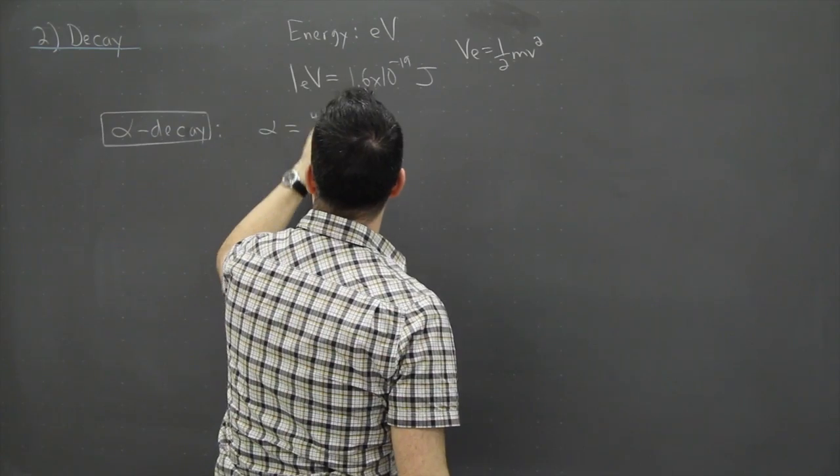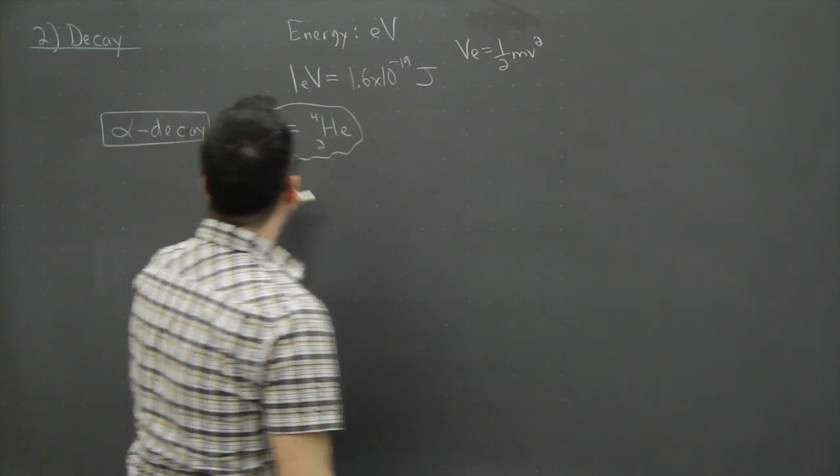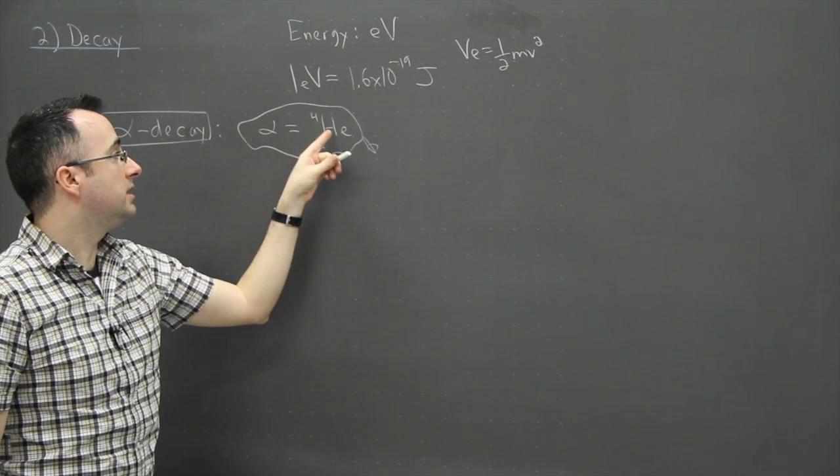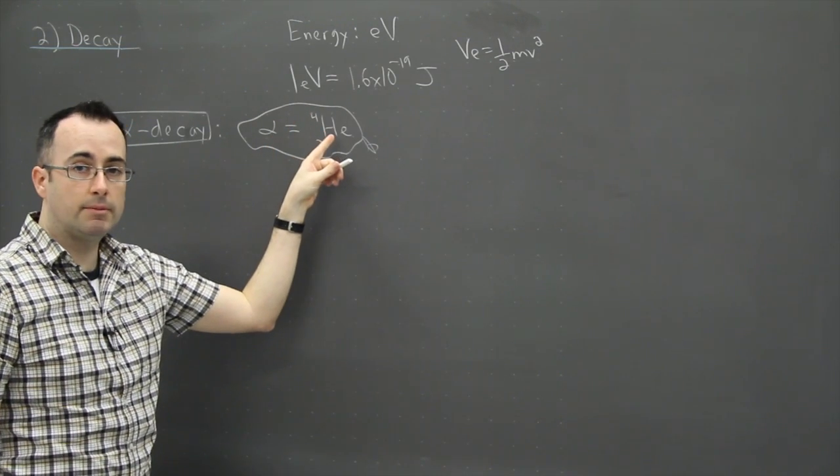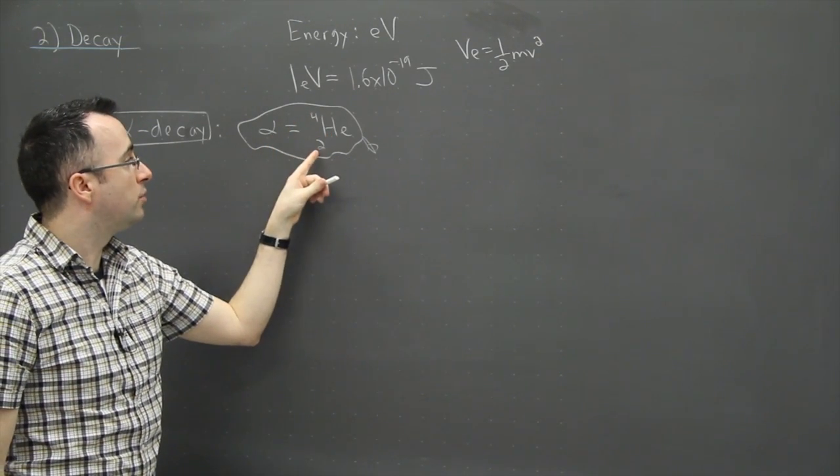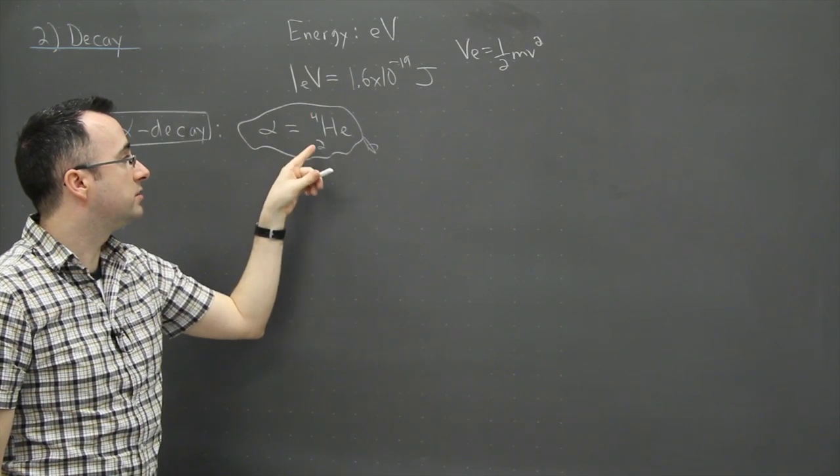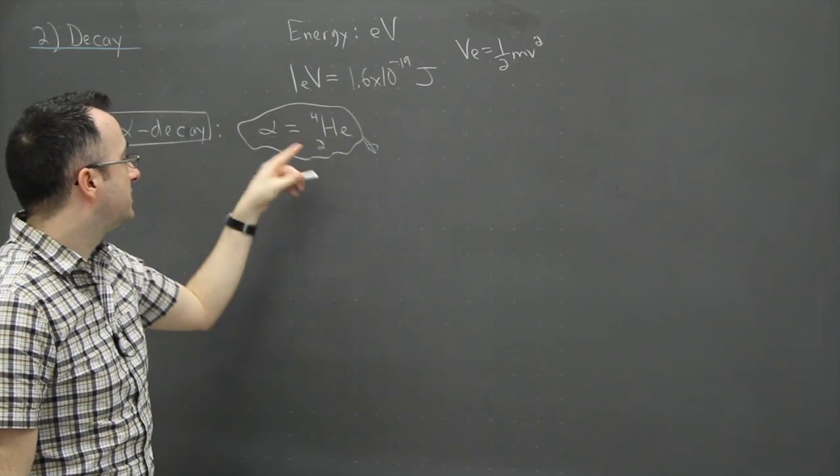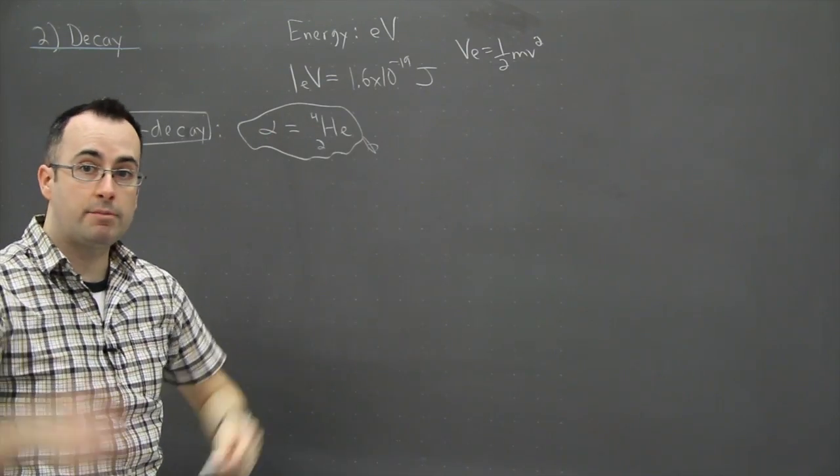So this is the key thing I think in alpha decay is this right here. That an alpha particle is nothing but helium-4. In other words, it's a regular old helium and that means it's got two protons and because 4 minus 2 that tells you it's also got two neutrons. So that's just helium-4 is all an alpha particle is.